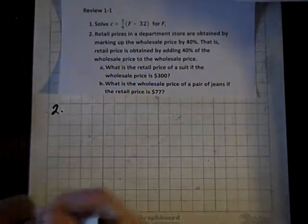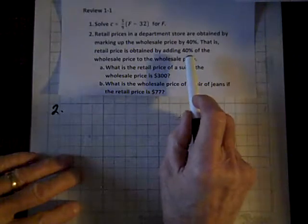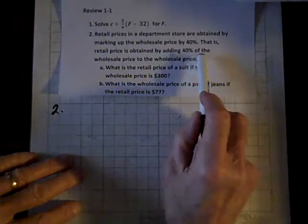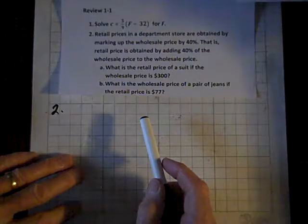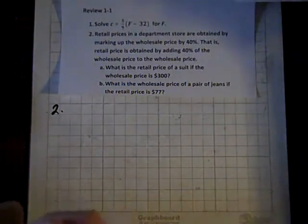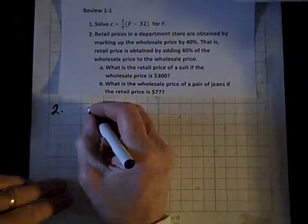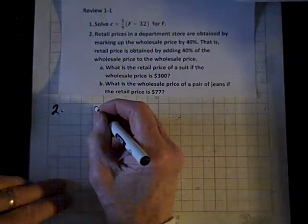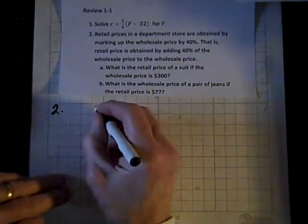Well, for question 2, we're supposed to mark the wholesale price up by 40 percent in order to get the retail price. Okay, so if we add 40 percent to 100, or 1, we get 1.4.